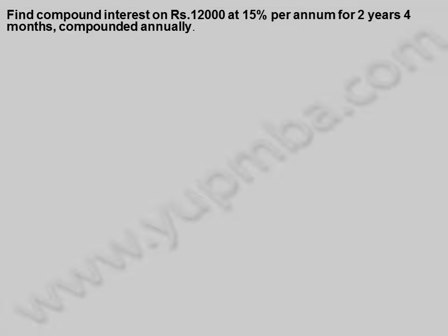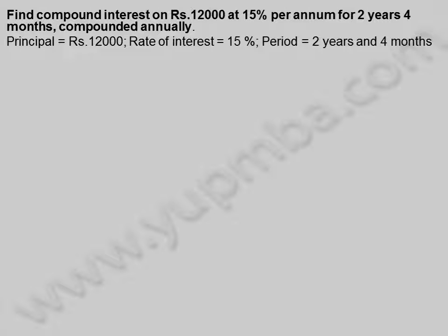Find compound interest on 12,000 rupees at 15% per annum for two years four months, compounded annually. Principal is equal to 12,000 rupees, rate of interest is equal to 15%, and period is equal to two years and four months.